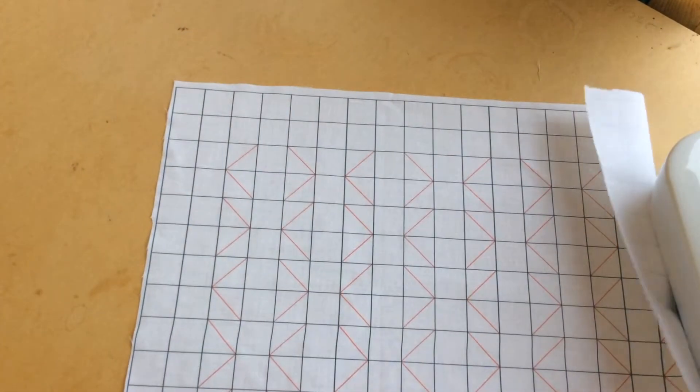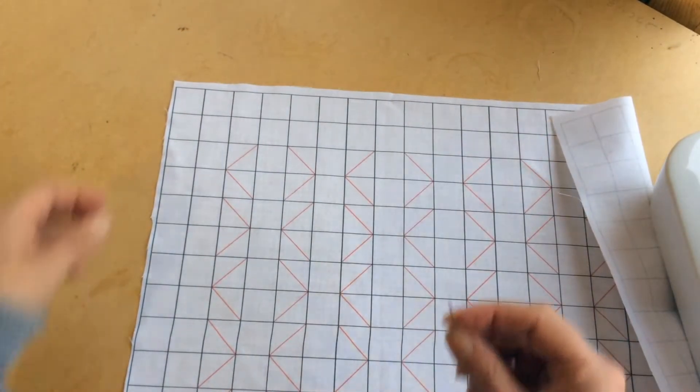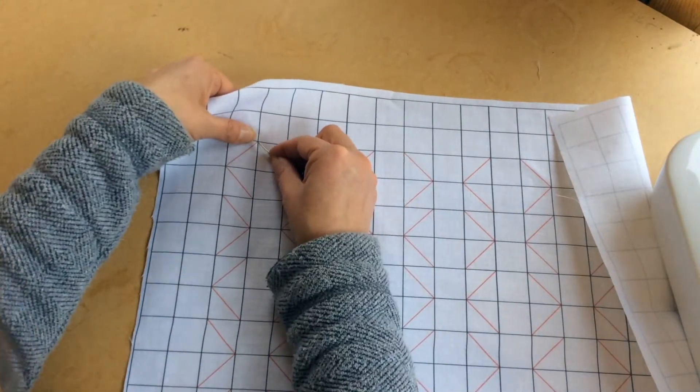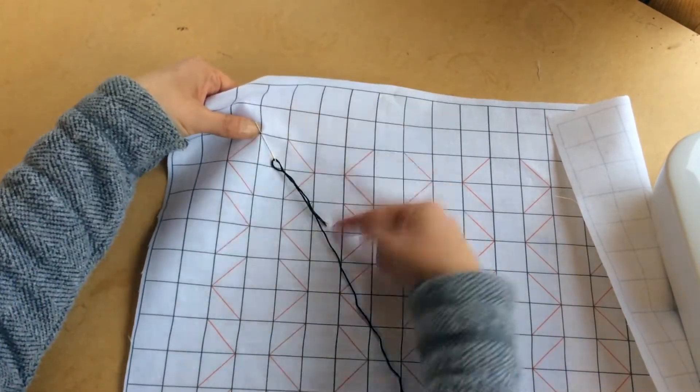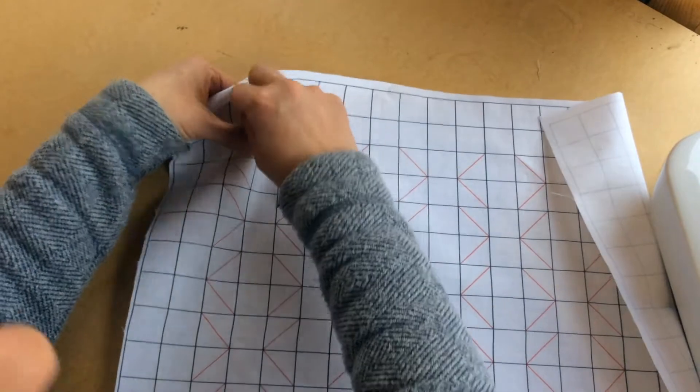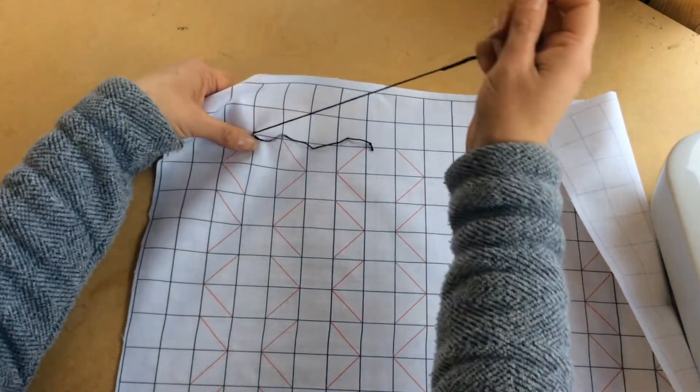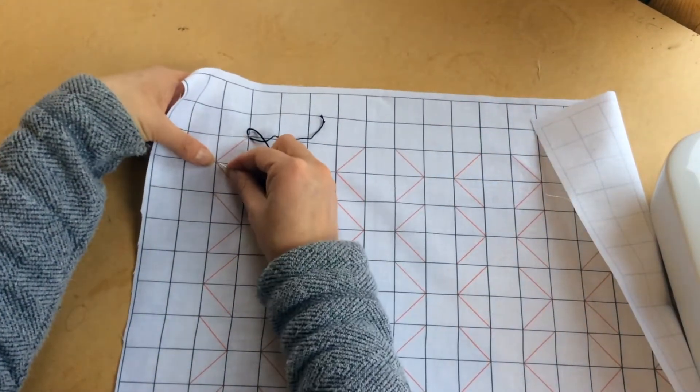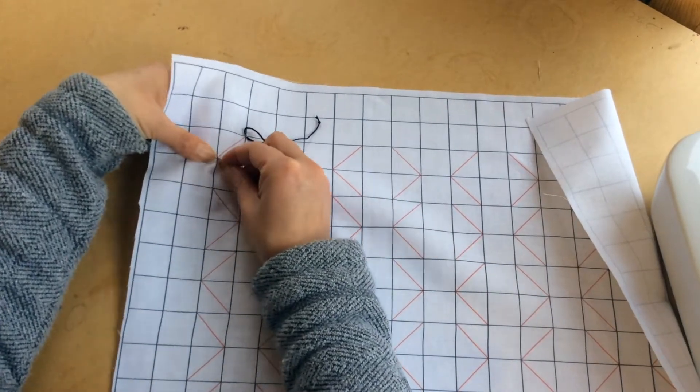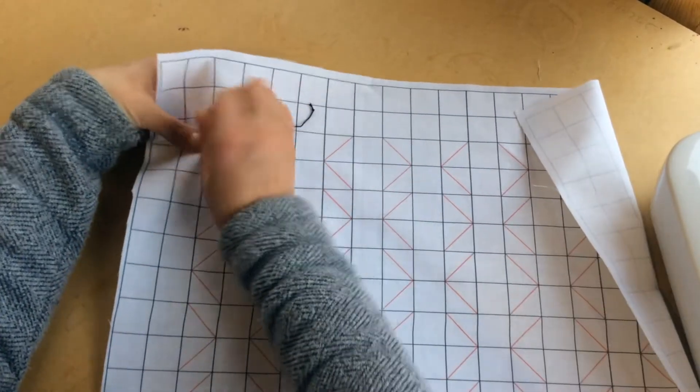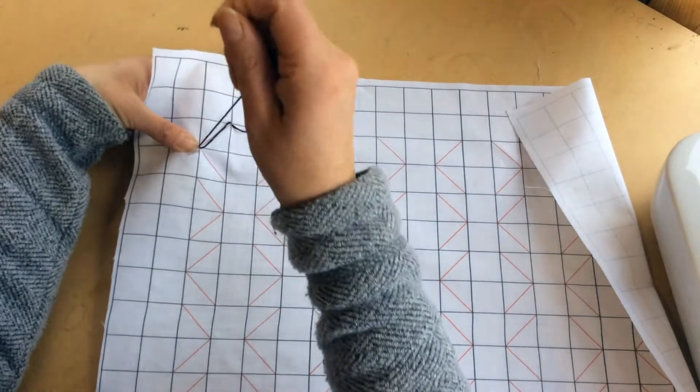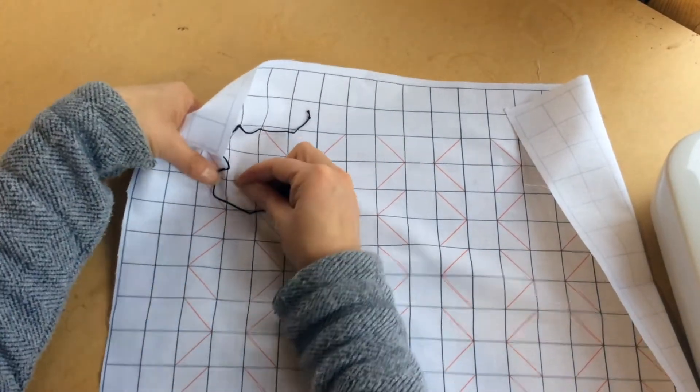We're going to take a piece of thread. I've got embroidery floss here but you don't want anything as thick as that - just a normal cotton. I'm going to go through each of those corner points on this little triangle - one there, one there, and one down at the bottom. I'm literally just going in and out of the fabric.